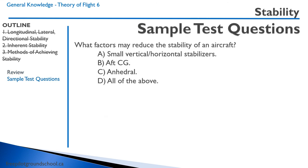What factors may reduce the stability of an aircraft? Option A: small horizontal and vertical stabilizers — yes, that's correct because large ones increase stability. Option B: aft center of gravity — yes, that decreases longitudinal stability. Option C: anhedral — that's the opposite of dihedral, where the wingtips are lower, which reduces stability. So the correct answer is D, all of the above.